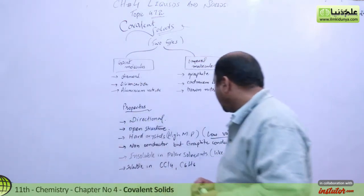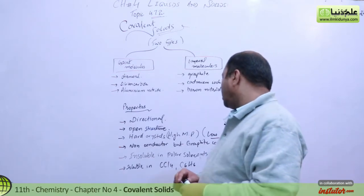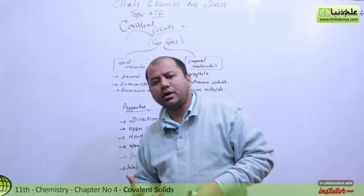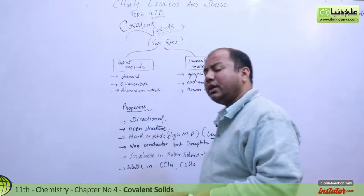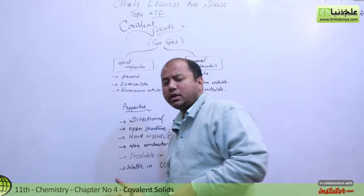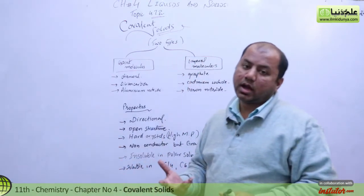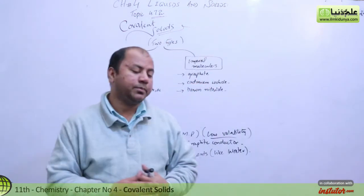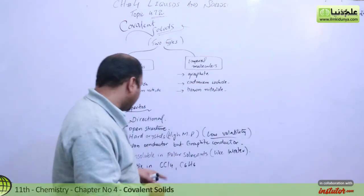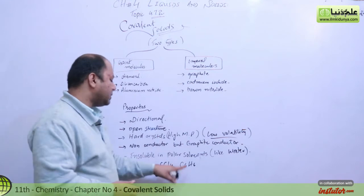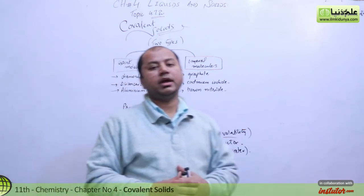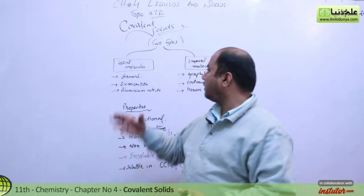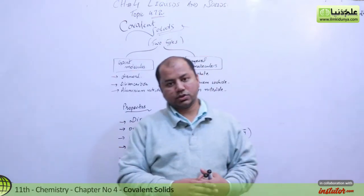Graphite is insoluble in polar solvents like water. It is also insoluble in non-polar organic solvents such as carbon tetrachloride and benzene. However, covalent solids in general are soluble in non-polar solvents.